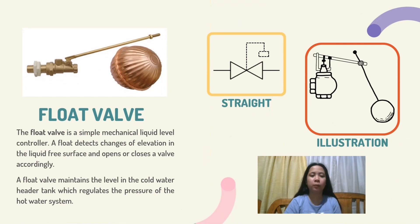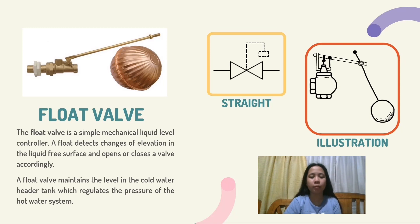Float valve. The float valve is a simple mechanical liquid level controller. It detects changes of elevation in the liquid free surface and opens or closes a valve accordingly. A float valve maintains the level in the cold water header tank, which regulates the pressure of the hot water system. Here is the symbol: straight and the illustration of float valve.